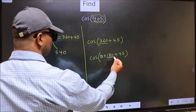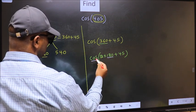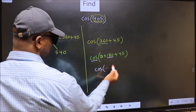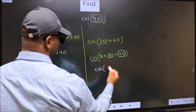Next, here we have 180. So, cos is not going to change. It will remain cos. And inside, we get this angle 45.